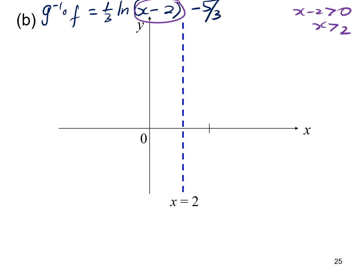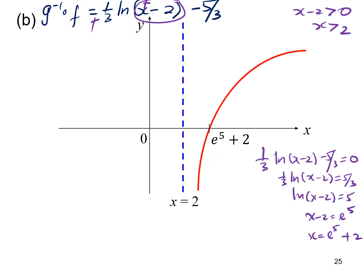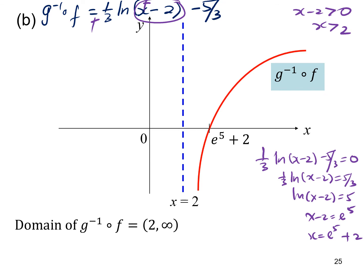The domain of g⁻¹∘f: from the log function, x − 2 > 0 so x > 2, giving the domain (2, ∞). Finding the x-intercept (set y = 0): (1/3)ln(x − 2) = 5/3, so ln(x − 2) = 5, giving x = e⁵ + 2. The graph of this log function is positive and increasing for x > 2. From the graph, the domain is (2, ∞) and the range is all real numbers.